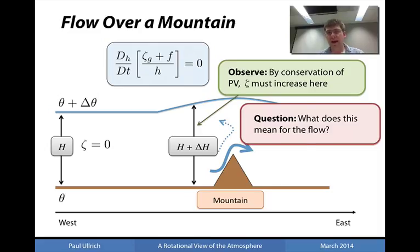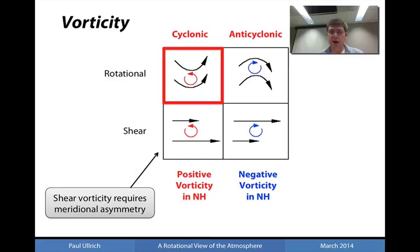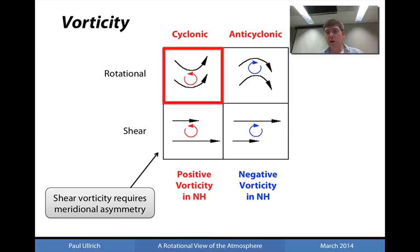So what does this mean for the flow? Suddenly we have a flow that has transitioned from having zero relative vorticity to a flow which now has positive relative vorticity. Well, there are a number of possibilities here. You can plot the types of vorticity that we've examined — namely rotational vorticity and shear vorticity along the y-axis — and we can plot cyclonic and anti-cyclonic vorticity along the x-axis. Recall that cyclonic vorticity corresponds to positive vorticity in the northern hemisphere and anti-cyclonic vorticity corresponds to negative vorticity in the northern hemisphere. Since we know that the vorticity is positive, it must be cyclonic.